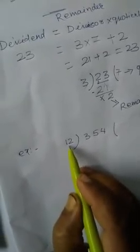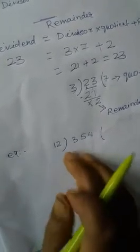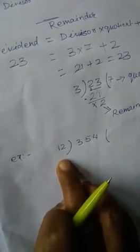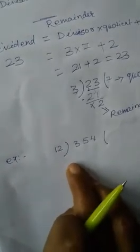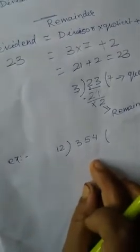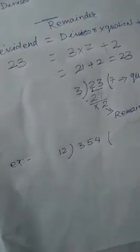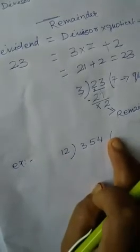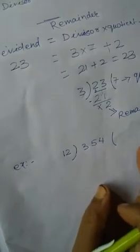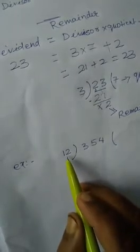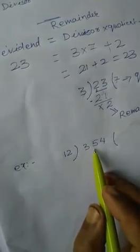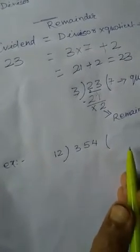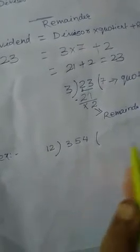Because here in case of the divisor, 12 is written. That means we must have a good concept about the table of 12: 12 ones are 12, 12 twos are 24, 12 threes are 36, 12 fours are 48, and so on. In division, you must know that at least one time we have to divide, or maximum up to 9. Any dividend is divided minimum one time and maximum up to 9.